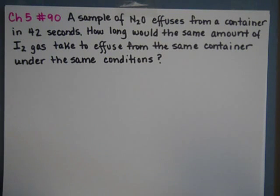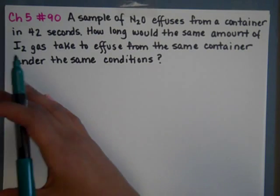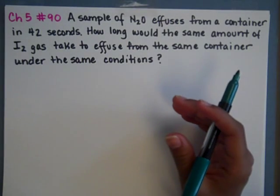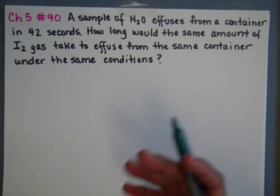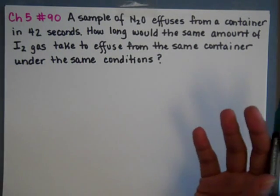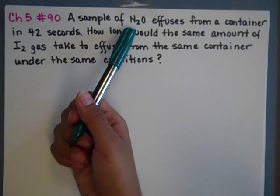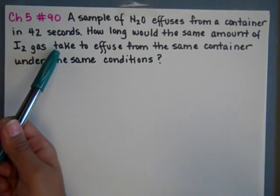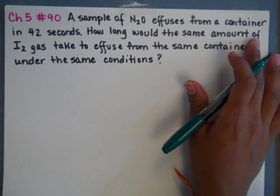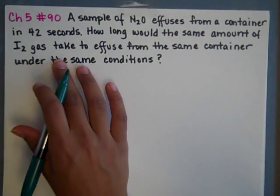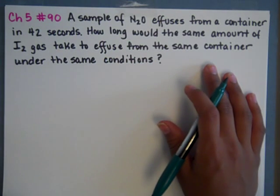This example is for kinetic molecular theory, specifically Graham's Law and effusion rates. Remember, effusion is when a sample has a hole and goes into a vacuum, and we can calculate how long it would take and its effusion rate. We know that a sample of dinitrogen oxide effuses from a container in 42 seconds. How long would the same amount of iodine gas take to effuse from the same container under the same conditions?